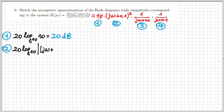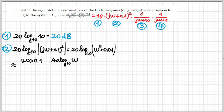Number two is a second order term at the numerator. If you calculate 20 log₁₀ the magnitude of that term, you obtain 20 log₁₀ of (ω² + 0.01).